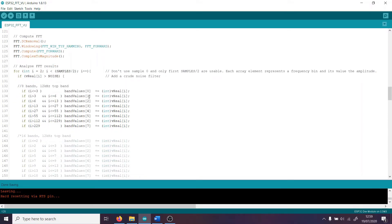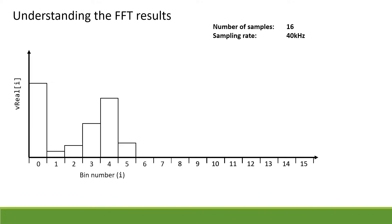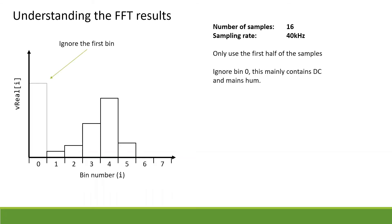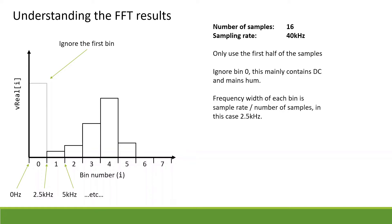Now we have our results we need to understand them. Each element in our VReal array represents a frequency bin, and the value of each element represents the amplitude or the amount of that frequency. To keep things simple, let's say we did an FFT with 16 samples instead of 1024. We have 16 bins, but we can only use the first half — from i equals 0 to i equals 7 — as the rest are negative and meaningless for looking at power. The first sample is also unusable as it is swamped by DC, so we discard that. The bin width is the sample rate divided by the number of samples — at 40 kilohertz with 16 samples, each bin is 2.5 kilohertz wide.